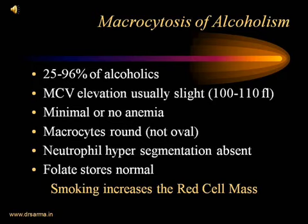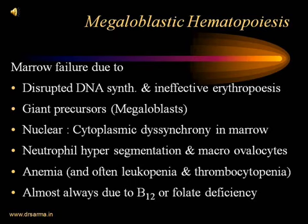In smokers, the red cell mass increases to compensate for the decreased oxygen-carrying capacity of carboxyhemoglobin. In alcoholism we see macrocytic anemia; in smokers we see polycythemia. In macrocytic anemia with megaloblastic hematopoiesis, there is marrow failure due to disrupted DNA synthesis and ineffective erythropoiesis. The key nutrients for DNA synthesis are folate and vitamin B12. In their absence, DNA synthesis is disrupted. The joint precursor cells — the RBC grandparents — are all enlarged and are called megaloblasts. There are no more normoblasts, and nuclear-cytoplasmic disharmony is seen in the bone marrow.